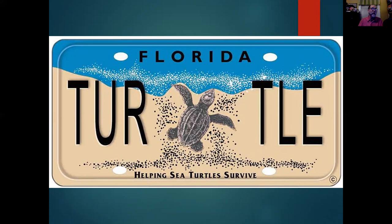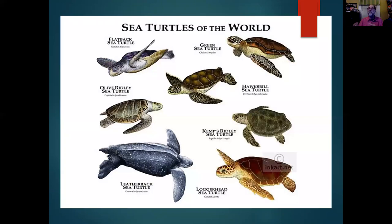We just often say 'sea turtles,' but there are actually many types. There are seven major types in the world. Five of them can be found in Florida and four of them can be found in Georgia.